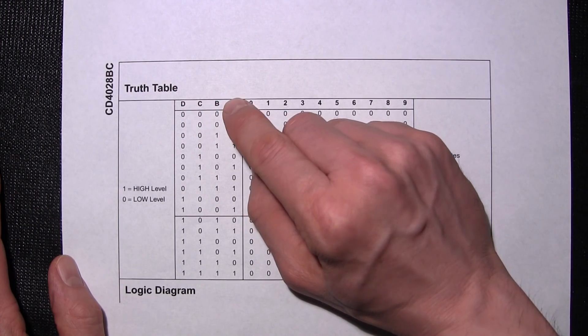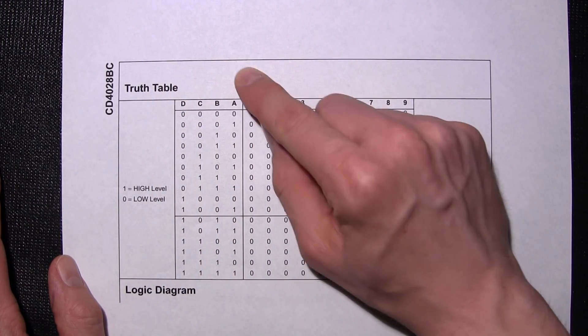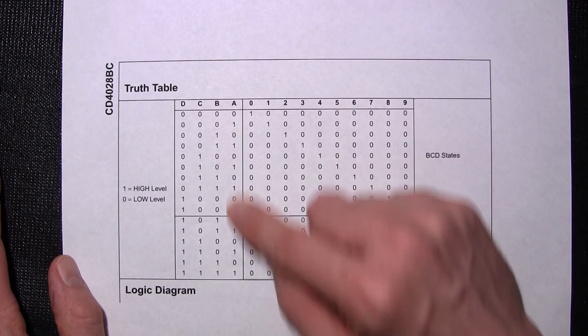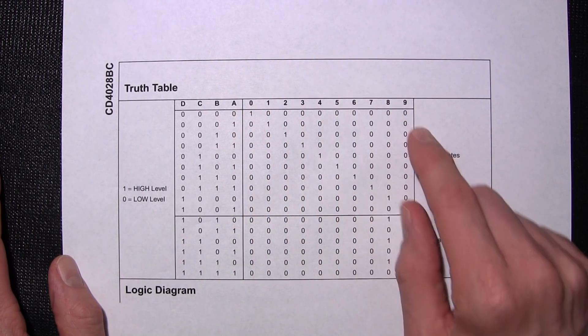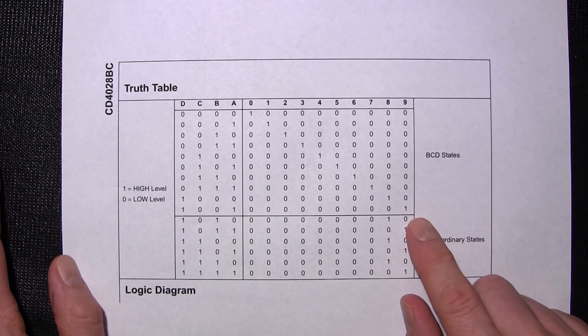BCD stands for binary coded decimal to decimal decoder. So the D, the C, the B and the A columns are the BCD or binary coded decimal columns and the 0 to 9 is the decimal portion. So BCD to decimal decoder.